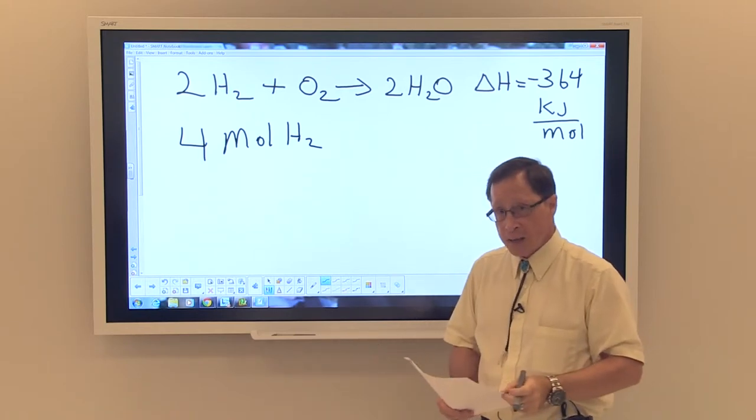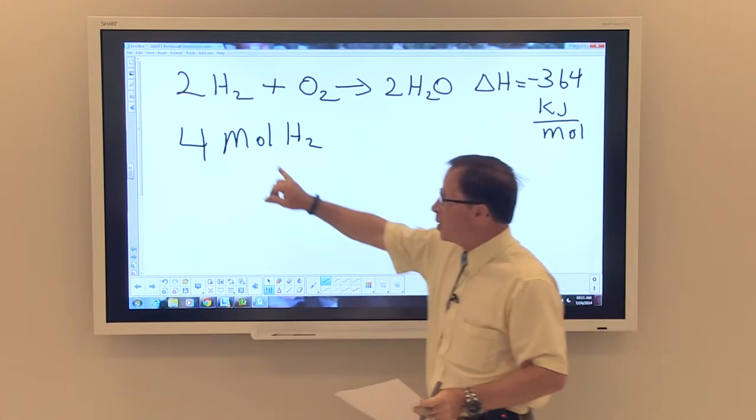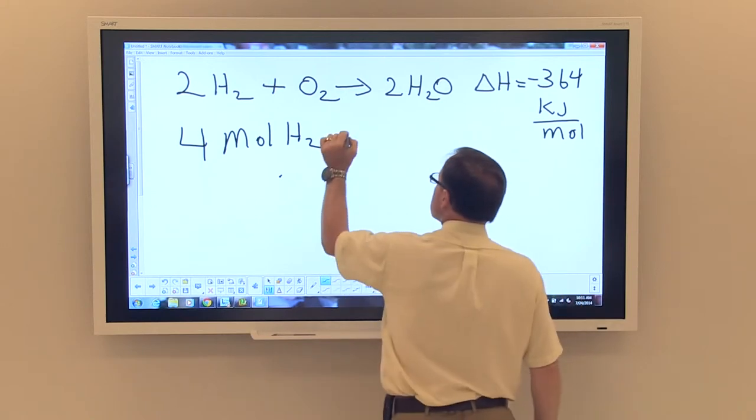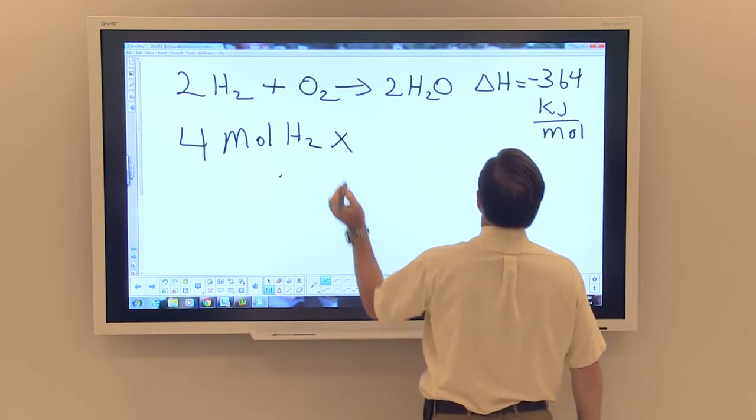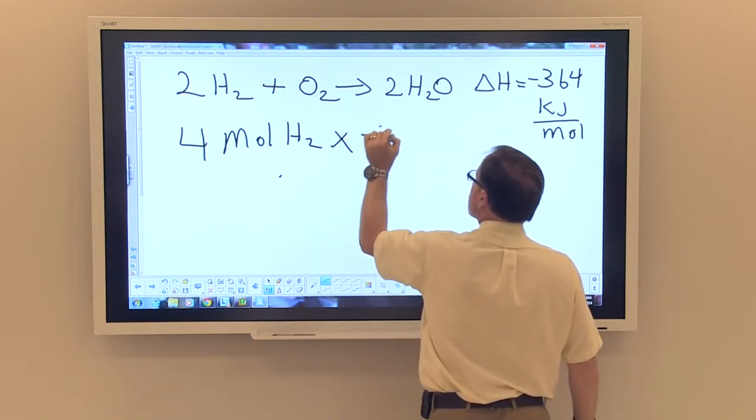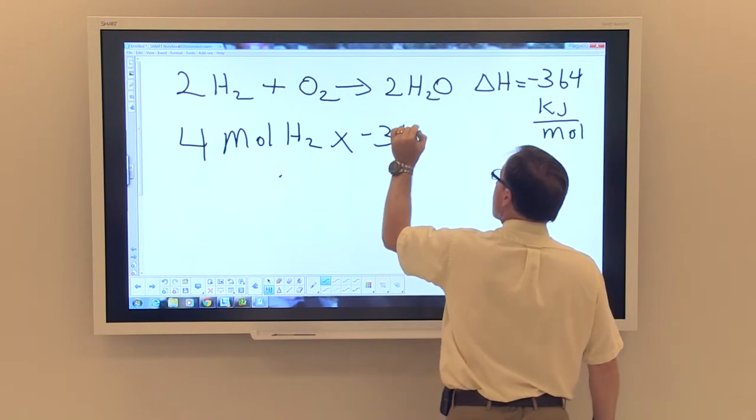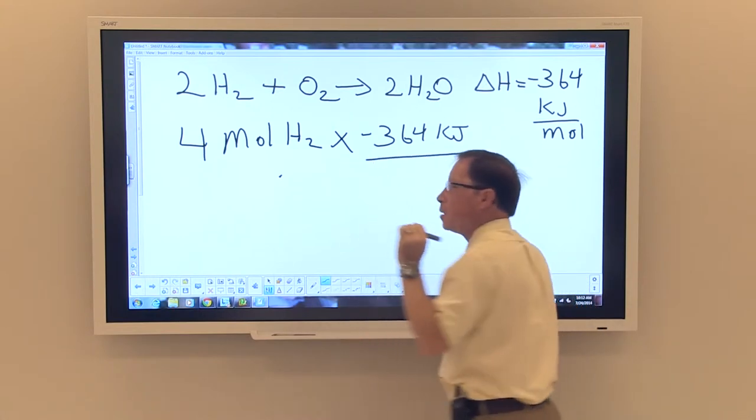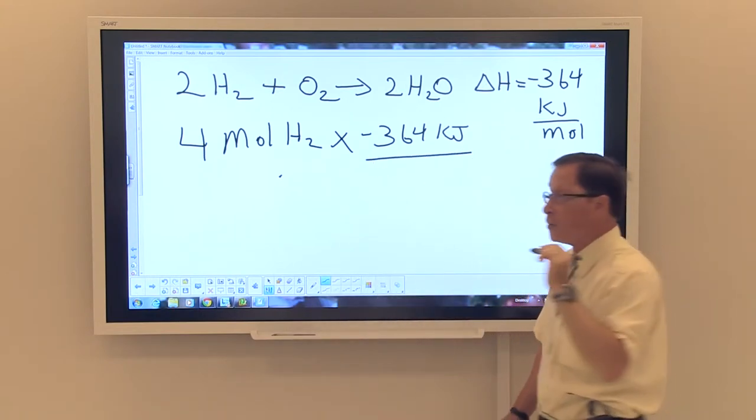If that is the case, then here's how we would set that up. We would say we have four moles of hydrogen times negative 364 kilojoules for every two hydrogens.